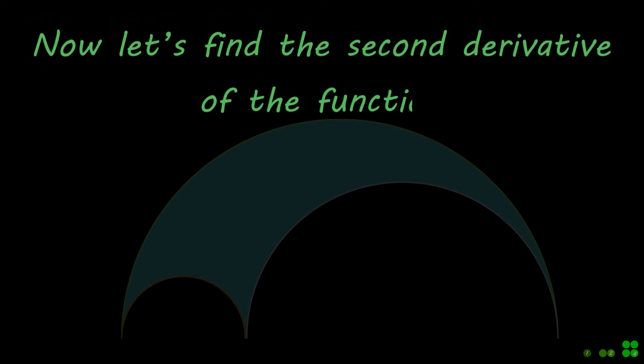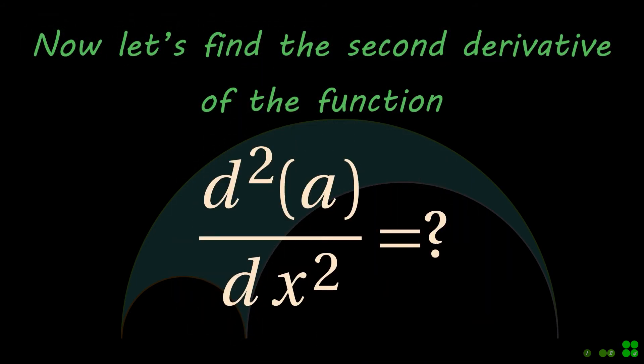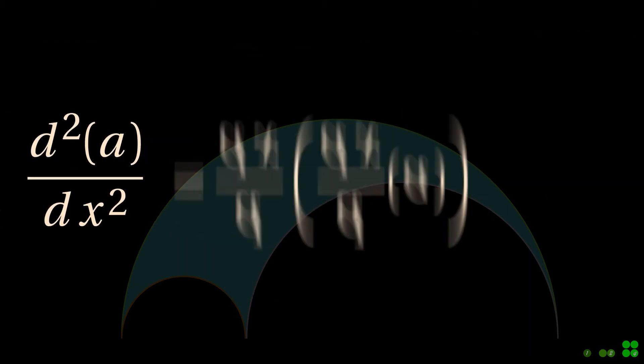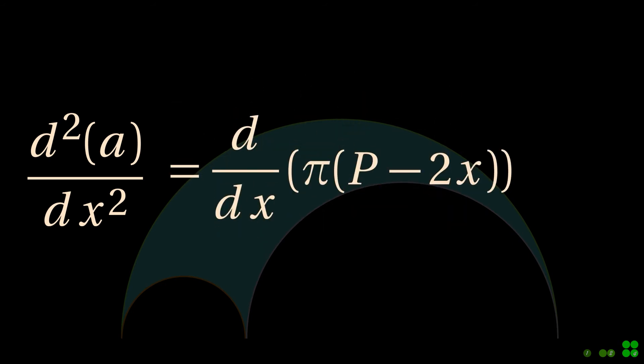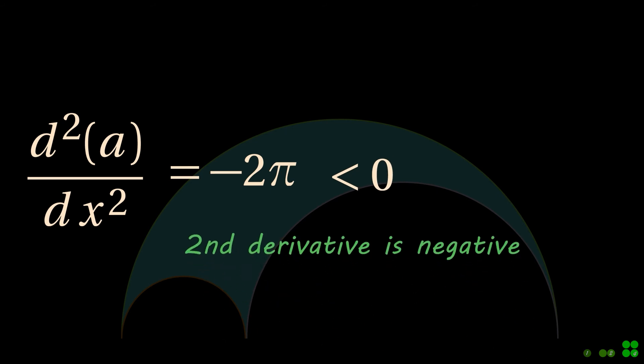Now find the second derivative. Since the second derivative is negative, the function has a maximum point.